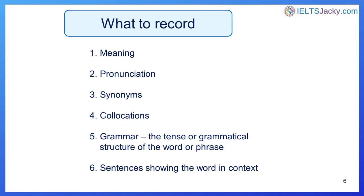For each new word there are several things you should record in your notebook: meaning, pronunciation, synonyms, collocations, and grammar — that is, the tense or grammatical structure of the word or phrase. There are more things you could record, but these five are a must. If you don't know them, then you don't know the word properly — one hundred percent — and you probably aren't ready to use it in your exam. If you do have this level of understanding about a word, it will become a powerful and versatile tool that you'll probably be able to use in answers to a range of different questions, both in the speaking and writing tests. Make sure that you jot down a few sentences that include the word or phrase to show its meaning and in what situation you'd use it.